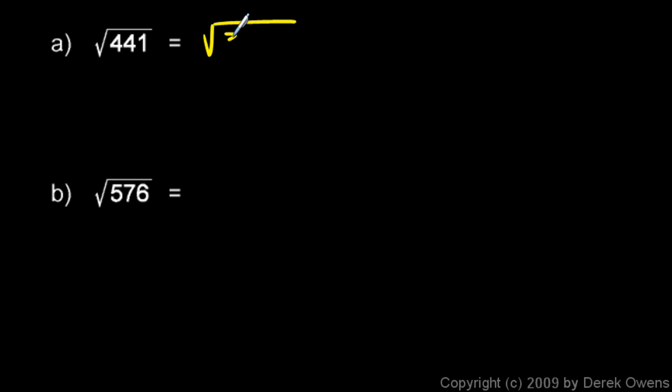And it turns out that 441 is 3 times 147. 147 is also divisible by 3. 147 can be written as 3 times 49.